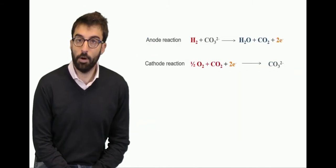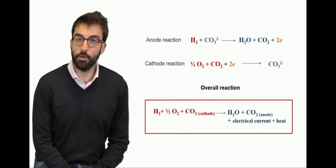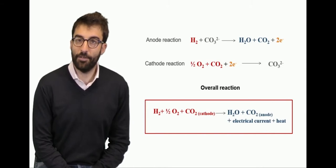So overall, the two different reactions, anode and cathode, are hydrogen that reacts with carbonates to produce steam and carbon dioxide, while carbon dioxide is reacting with oxygen to produce carbonate. So there is a sort of migration of carbon dioxide from the cathode to the anode. This introduces a pretty interesting aspect at system level that may be a problem issue or sometimes an opportunity.